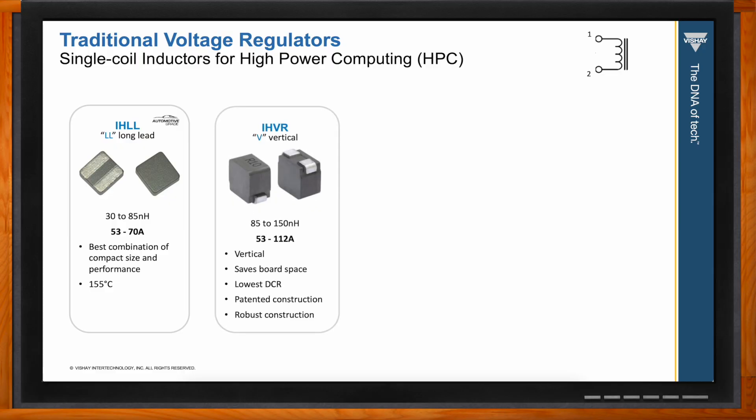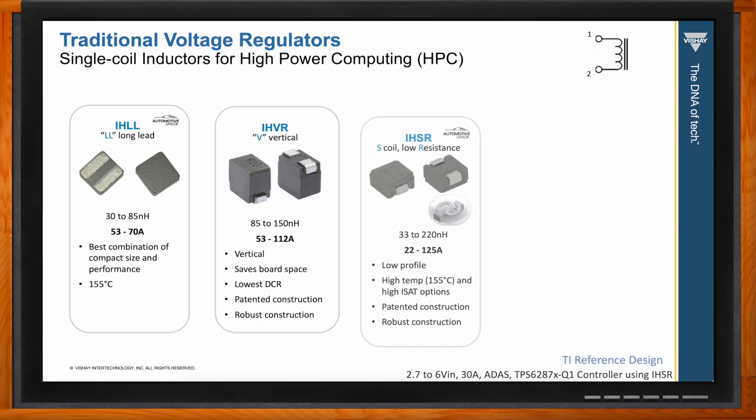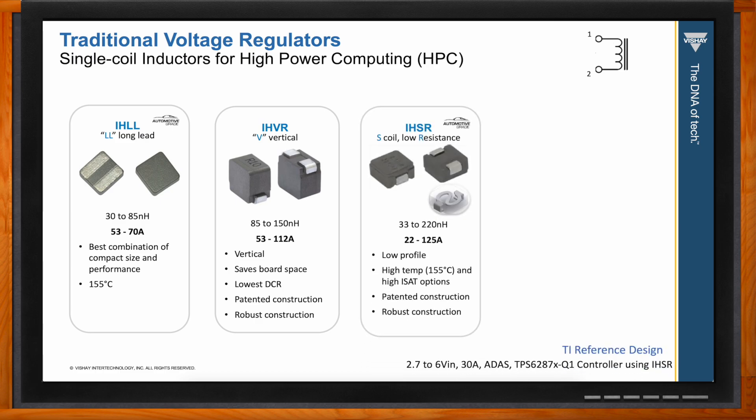The IHVR product — VR for vertical — is available up to 150 nanohenries, can support up to 112 amps, is designed to save board space, has the lowest DCR for a given inductance, and has a patented robust construction. The IHSR products are also patented for their S-coil construction, designed to be low-profile and robust, handling high temperatures up to 155°C — making them ideal for automotive applications.